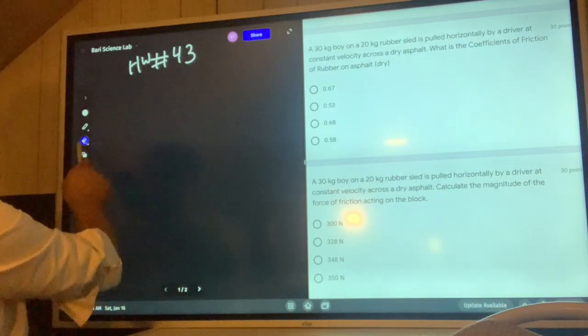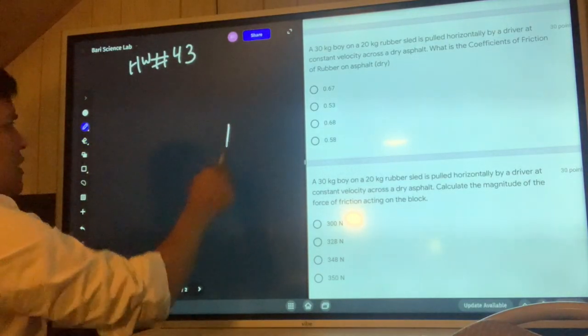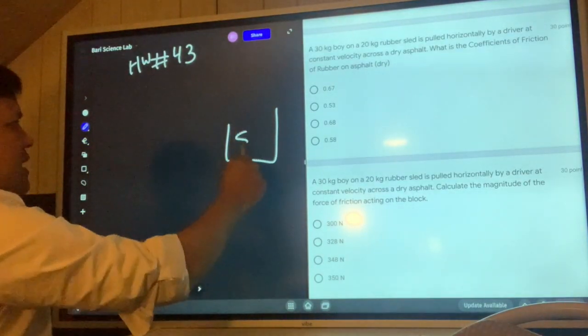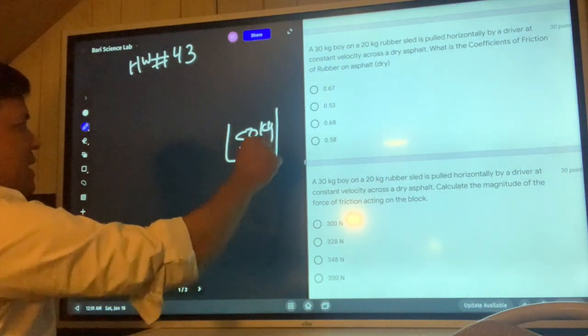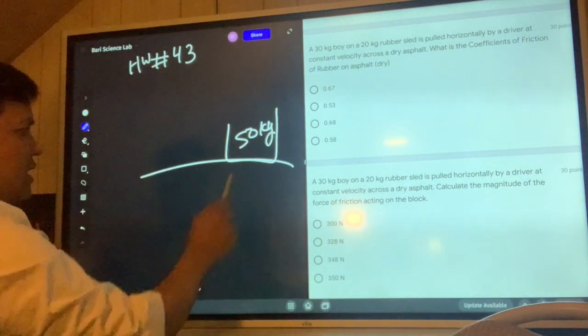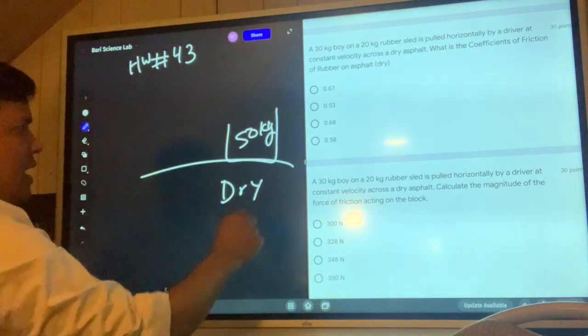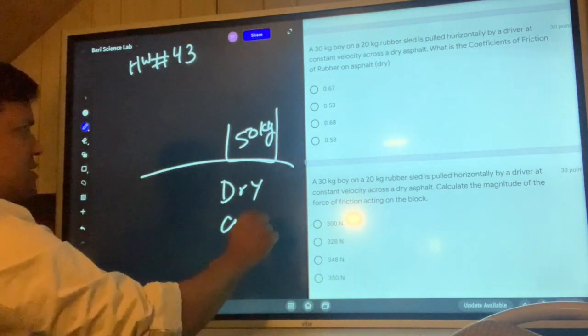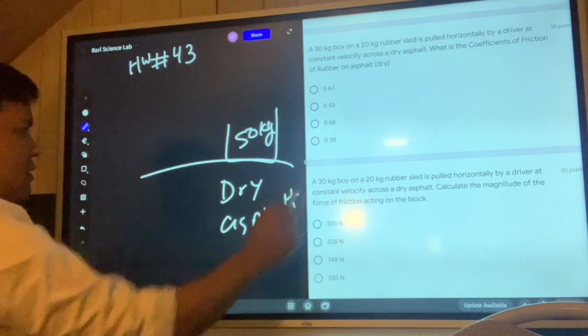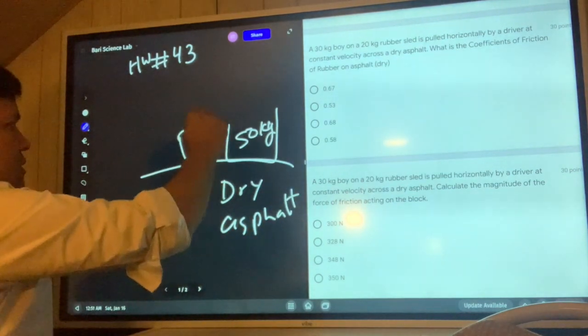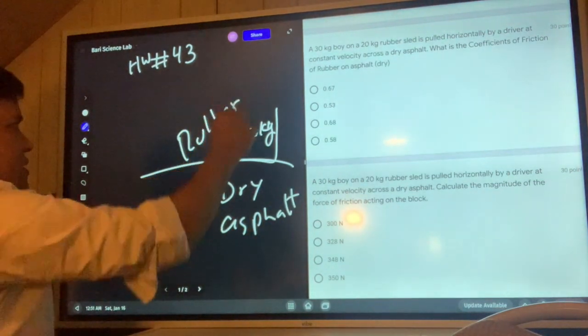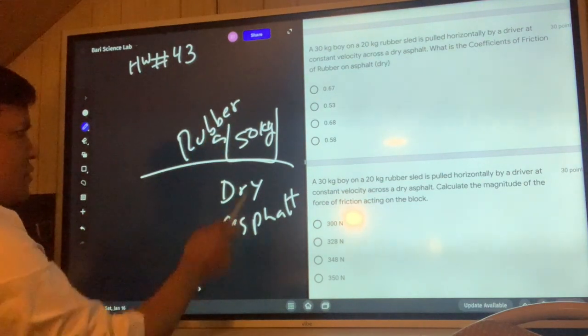You have a sled that's 50 kilograms, and the sled is moving on dry asphalt. The rubber sled is moving on dry asphalt.